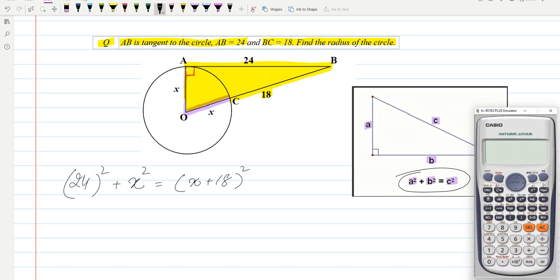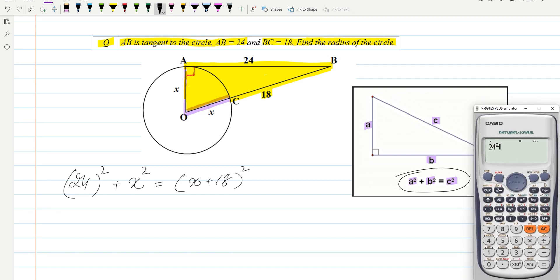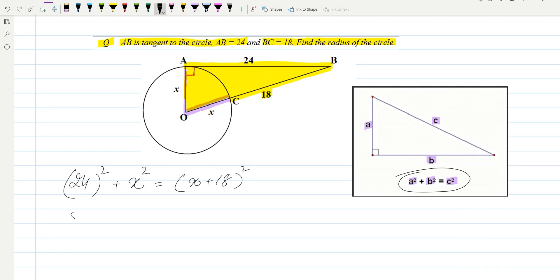Now we can check: 24² is equal to 576 plus x² equals, we have to open this square. We can write the formula (a + b)² equals a² plus b² plus 2ab, and we can apply this formula on this portion. This will be x² plus 18² plus 2 times 18 times x.